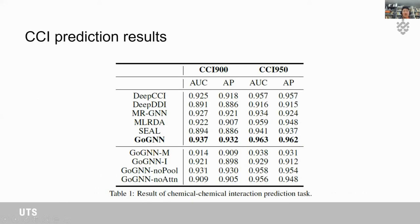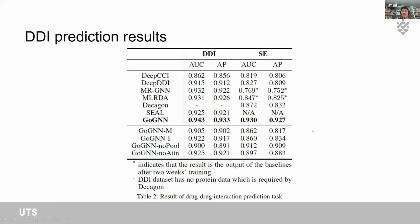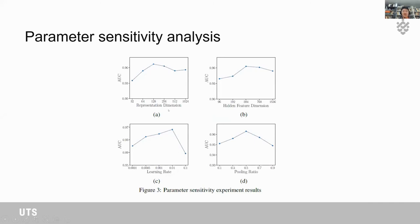Here are the results. We use AUC and average precision as evaluation metrics. GeoGNN outperforms all baseline methods on the CCI prediction task. We also conduct parameter sensitivity analysis and the results are shown in the figures.